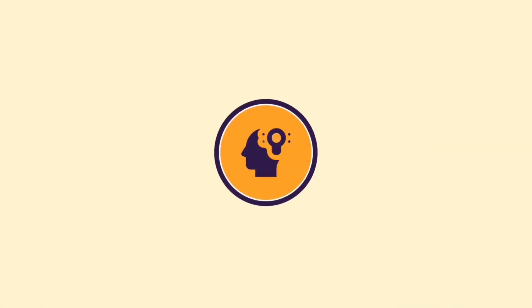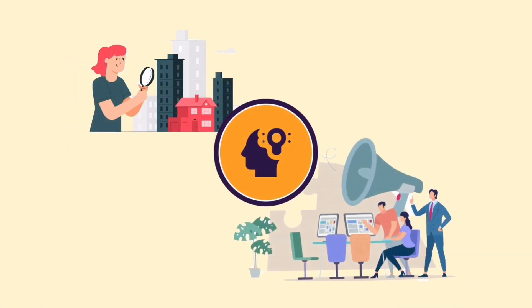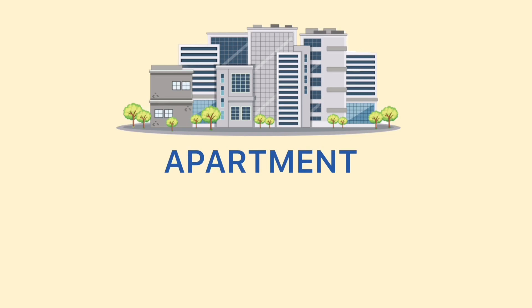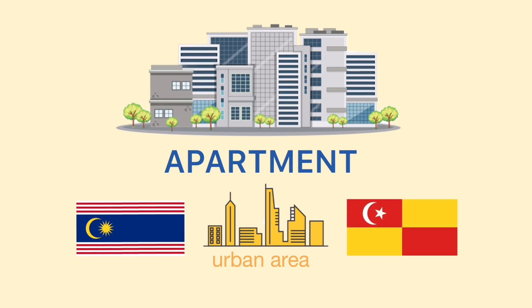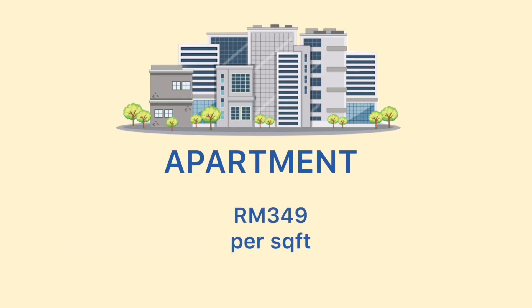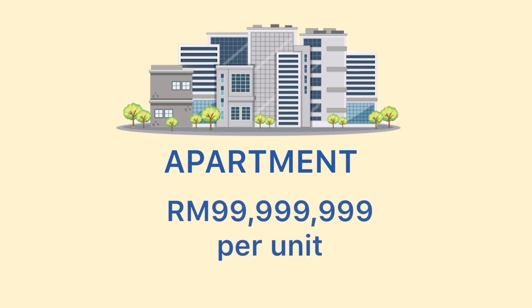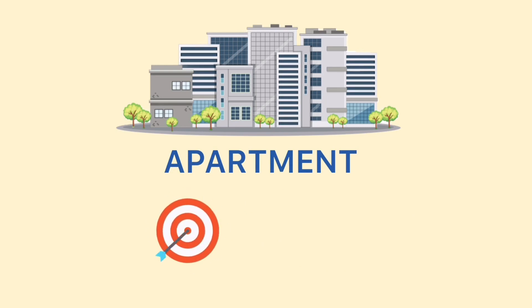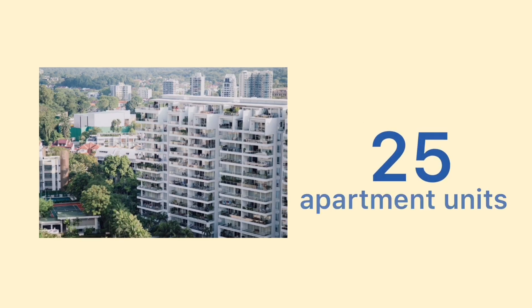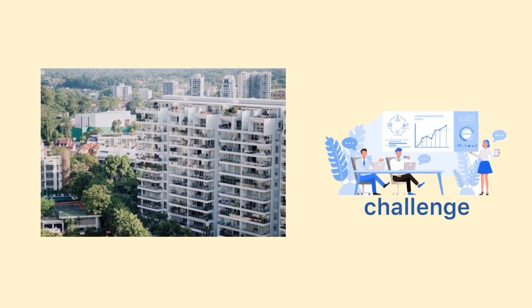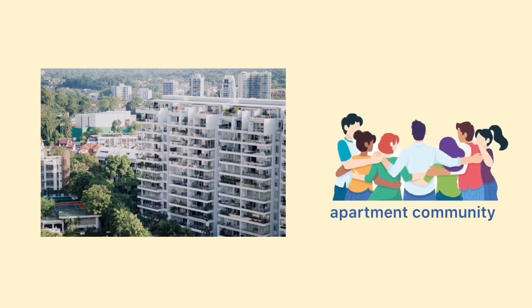Have you ever imagined how an apartment complex is being managed by its management? An apartment is located in urban areas such as in Kuala Lumpur and Selangor. The price range of an apartment is RM349 per square feet and can reach to nearly RM100 million per unit, meaning that the targeted residents are people with higher income. A five-floor apartment complex can at least have 25 units, so it will be a challenge for the management to manage the whole community.